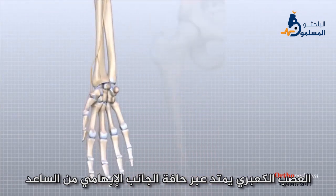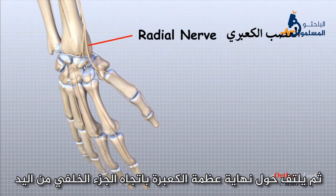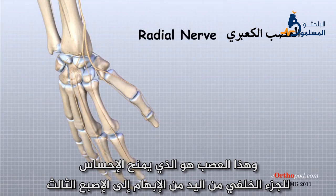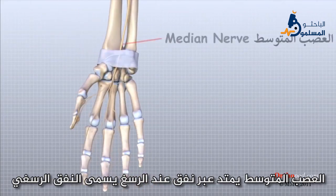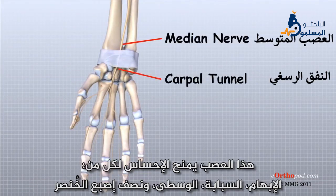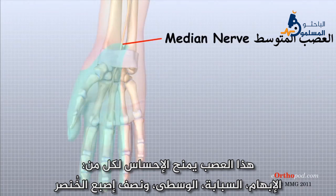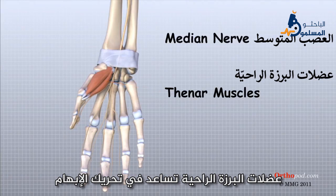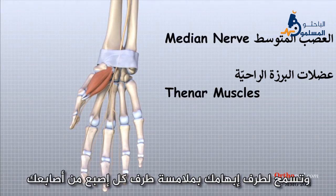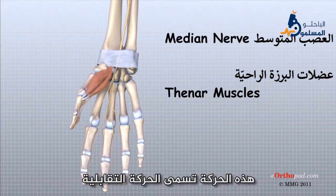The radial nerve runs along the thumb side edge of the forearm. It wraps around the end of the radius bone toward the back of the hand, giving sensation to the back of the hand from the thumb to the third finger, and also supplies the back of the thumb and just beyond the main knuckle of the back surface of the ring and middle fingers. The median nerve travels through a tunnel within the wrist called the carpal tunnel. This nerve gives sensation to the thumb, index finger, long finger, and half of the ring finger. It also sends a nerve branch to control the thenar muscles of the thumb, which help move the thumb and let you touch the pad of your thumb to the tips of each finger on the same hand — a motion called opposition.